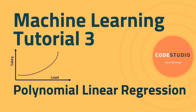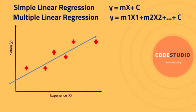Welcome to Code Studio. In this session we will discuss polynomial linear regression. We have previously learned simple linear and multiple linear regression models. Those models work when input data points are lying close to a straight line — when we apply them, they create a best fit line, and the coefficients and intercept variables are derived from that line to predict future values.